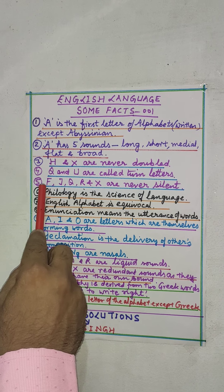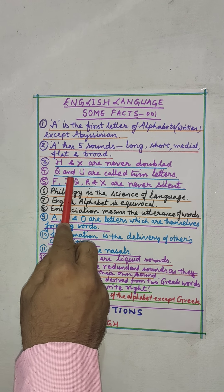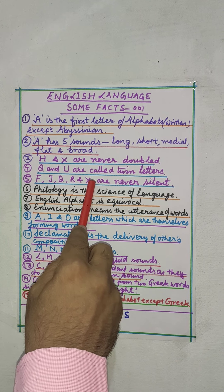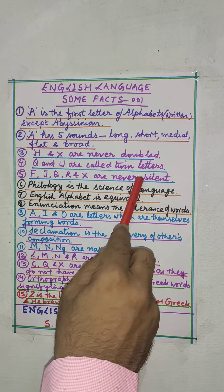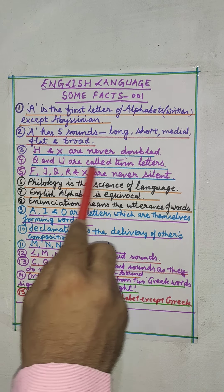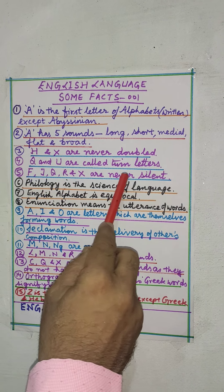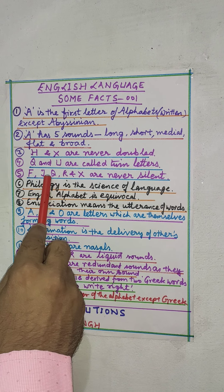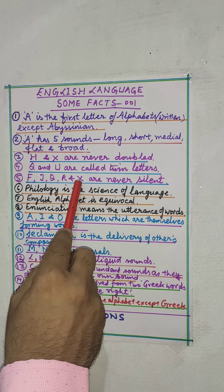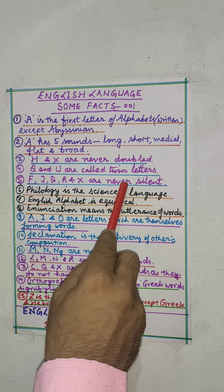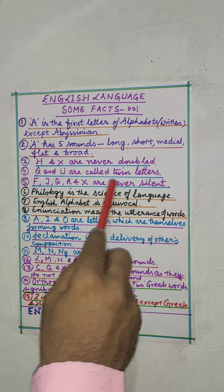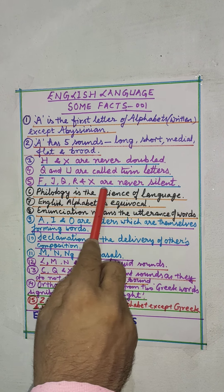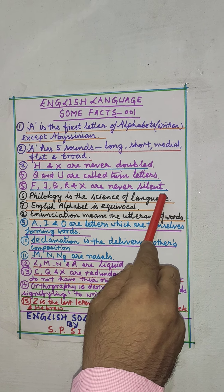The next point is that F, J, Q, R, and X are never silent in words. Then, philology is the science of language.